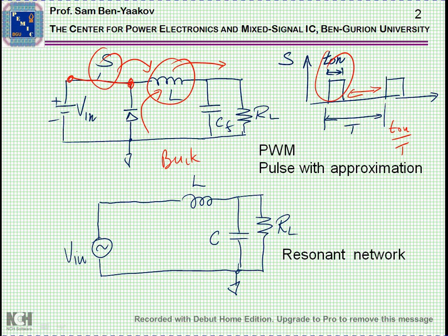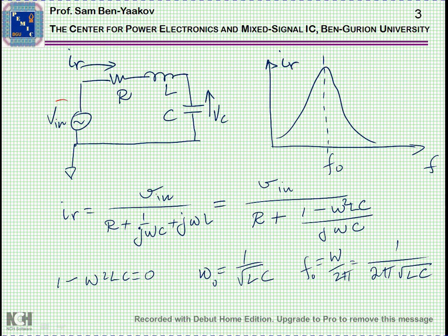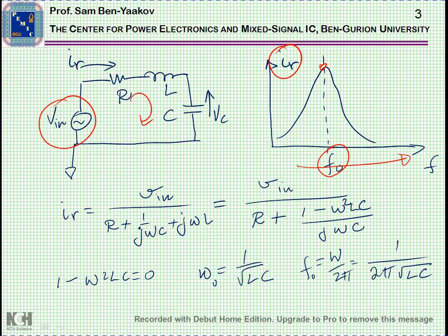Resonant converters are based on a resonant circuit shown here, which typically includes a source — here I'm showing a sinusoidal voltage source — an inductor, a capacitor, and RL representing the load. Energy is transferred from VIN to the load through the current which develops here, which will be a sinusoidal waveform. If we sweep the frequency of the source, we find that at a given frequency, the resonant frequency, the response will peak and the current through the circuit will reach a maximum value.